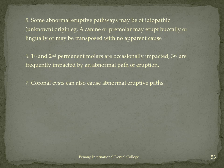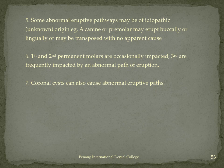Some abnormal eruptive pathways may be of idiopathic — unknown — origin: a canine or premolar may erupt buccally or lingually, or may be transposed with no apparent cause despite all space being available. First and second permanent molars are occasionally impacted; third molars are frequently impacted by an abnormal path of eruption. Coronal cysts in the region of the crown can also cause an abnormal eruptive pathway.